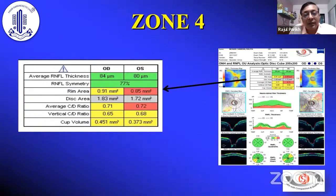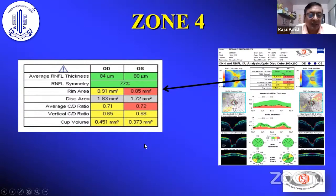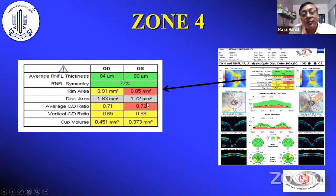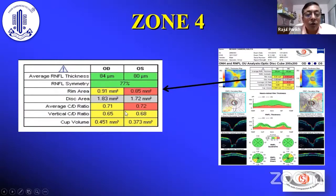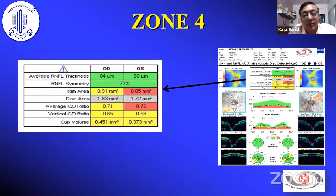The table — I don't pay too much attention to it, but you get a fair idea about disc area. A disc area of 1.8 is on the smaller side. Gray in the table means the machine has no normative database for that comparison. Yellow and red you know; green we know. Gray means the machine doesn't have enough normative data to do statistical analysis.